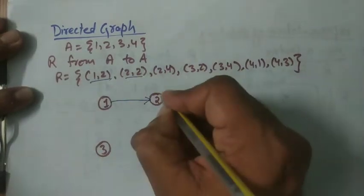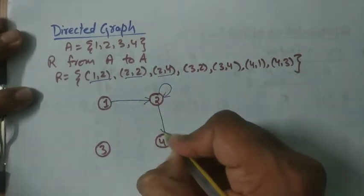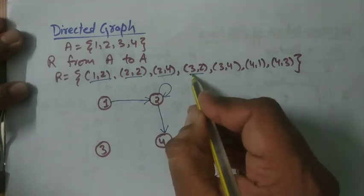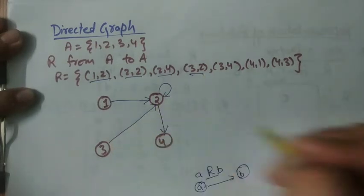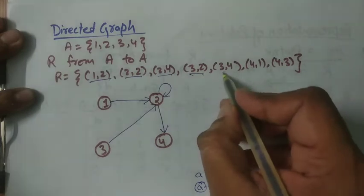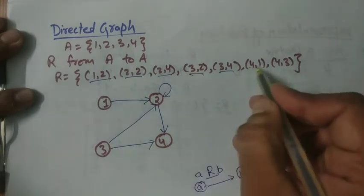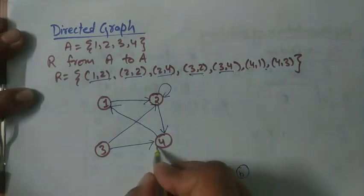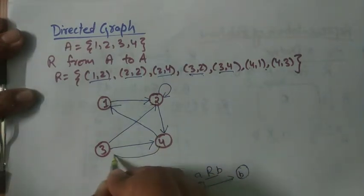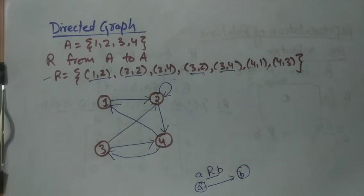Since 2 is related to 2, we draw a self-loop at node 2. From 2 to 4 we draw an edge. For ordered pair (3,2), since 3 is related to 2, from 3 to 2 we draw a directed edge. Similarly for (3,4) there is an edge from 3 to 4. For (4,1) there is an edge from 4 to 1, and for (4,3) there is an edge from 4 to 3. This directed graph represents relation R.